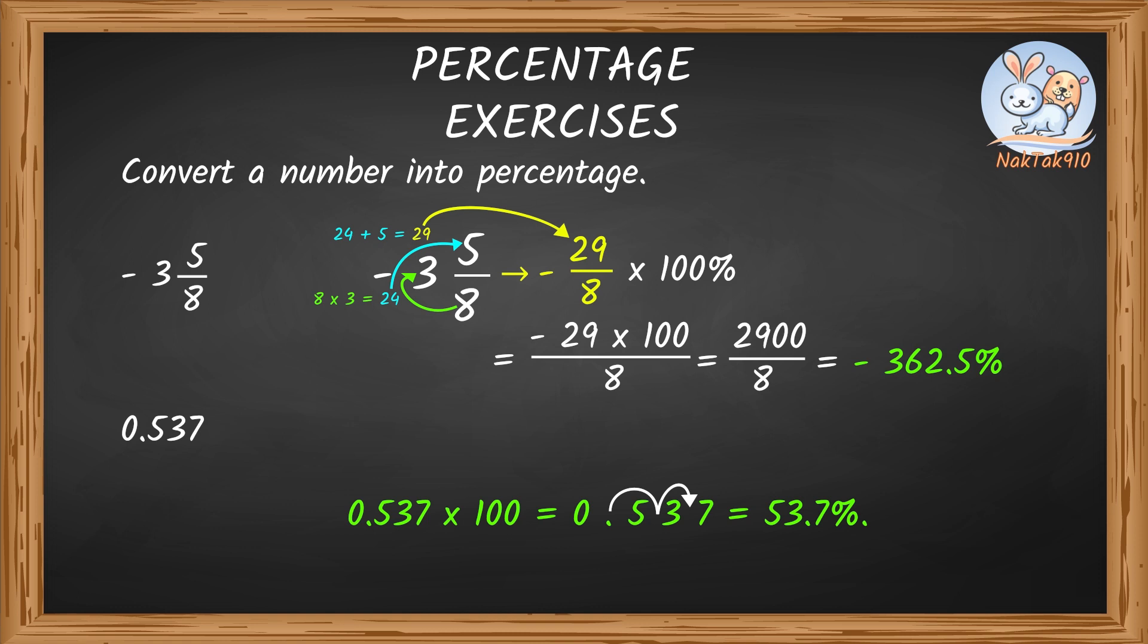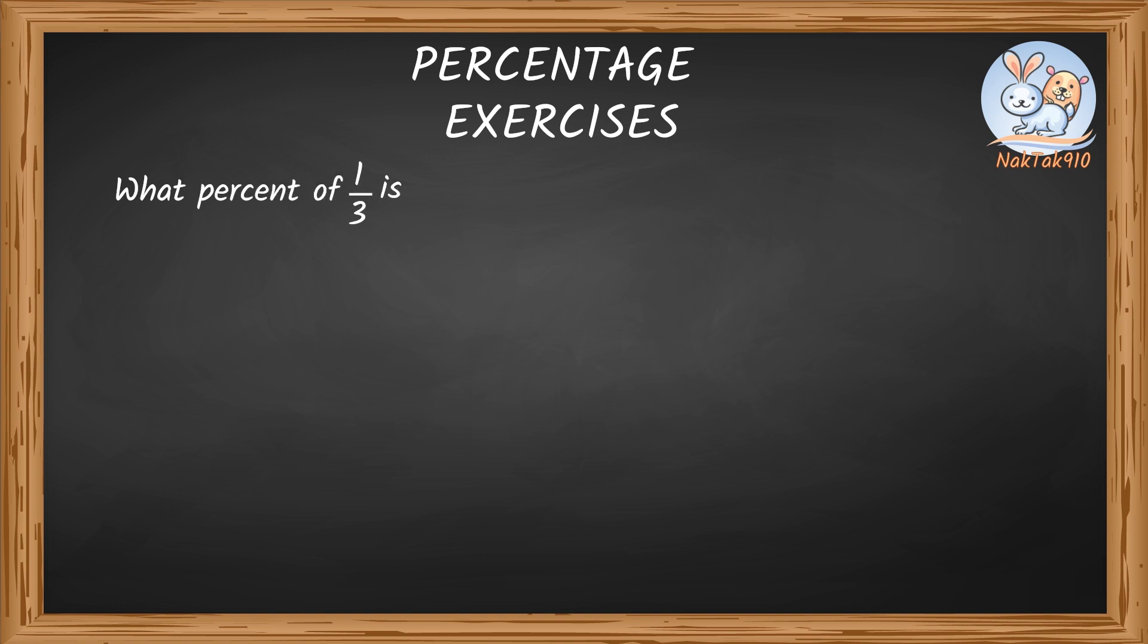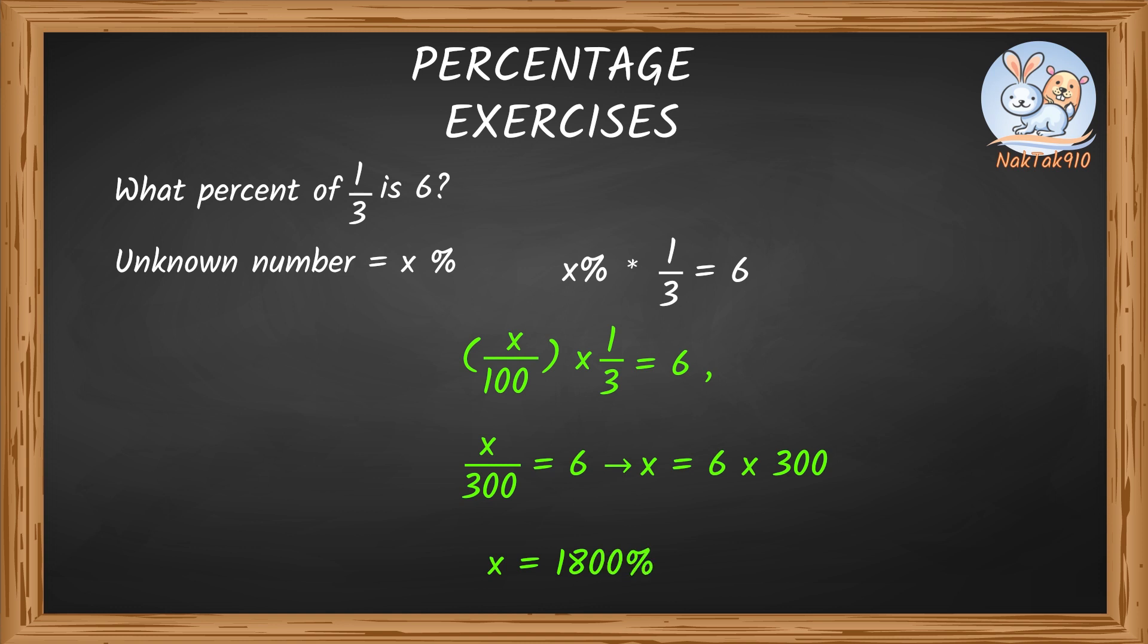Let's solve a few more percentage problems, but framed a little different. What percent of 1 by 3 is 6? Let's say the unknown number is something like x percent. Of means multiplication. 1 by 3 is 6. Let's rearrange them to get the value of x. x percent is x by 100 times 1 by 3 equals 6. x by 300 equals 6. x equals 6 times 300. x equals 1,800%.